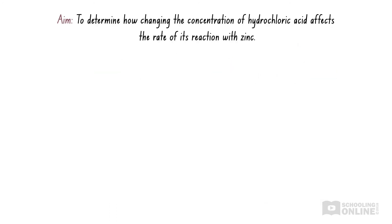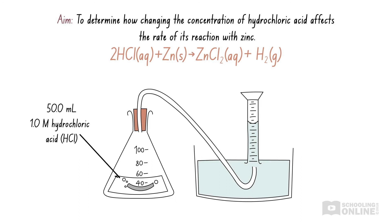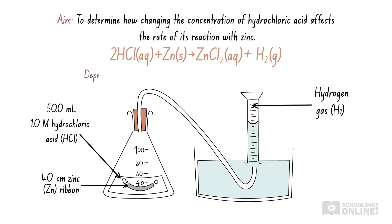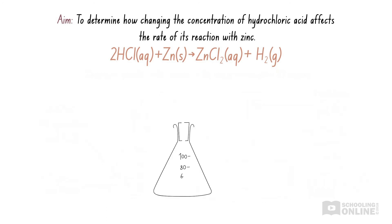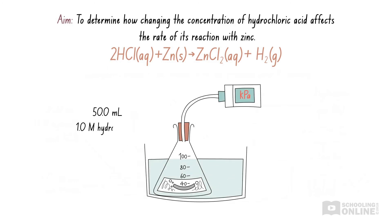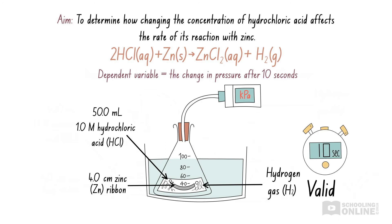Let's return to our experiment involving the reaction between zinc and hydrochloric acid. The aim was to determine how changing the concentration of hydrochloric acid affects the rate of its reaction with zinc. We measured the volume of hydrogen gas produced in 10 seconds — this is valid because a faster reaction will produce more gas in the same 10-second interval. Alternatively, we could perform the reaction in a sealed container with a pressure sensor. As the reaction proceeds, hydrogen gas is released and pressure increases. Measuring the pressure after 10 seconds is also valid, because a faster reaction will produce more hydrogen gas and cause a greater pressure increase.